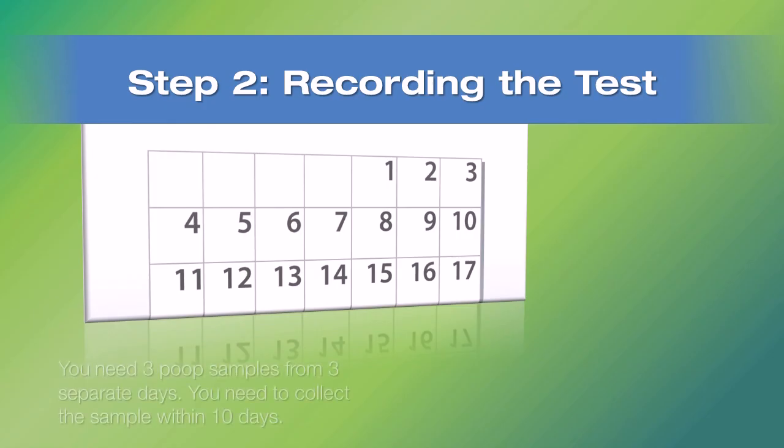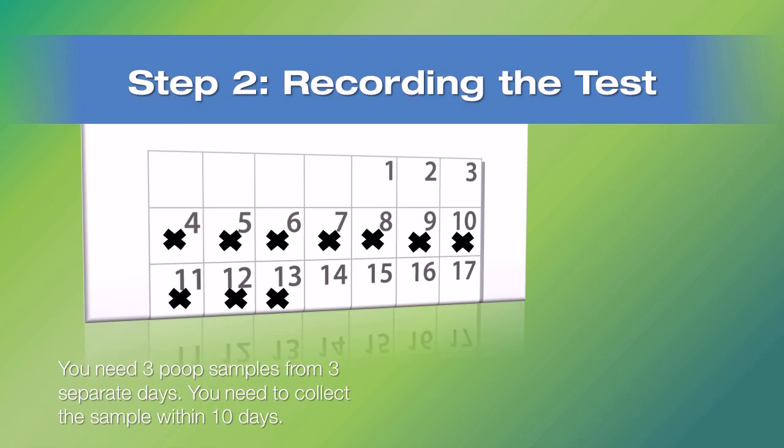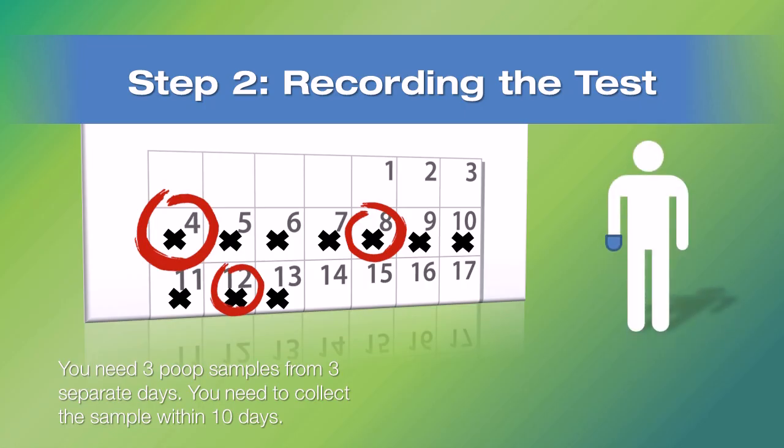You will be testing three different poop specimens on three different days. You will be collecting two samples from each of these three poop specimens. If it takes over 10 days to do this, the kit won't be analyzed, so try to complete it all within 10 days. Some people find it helpful to use a calendar. You can mark the first day you took the sample to make sure you get all the samples taken before 10 days are up.